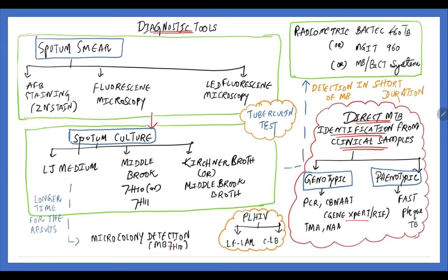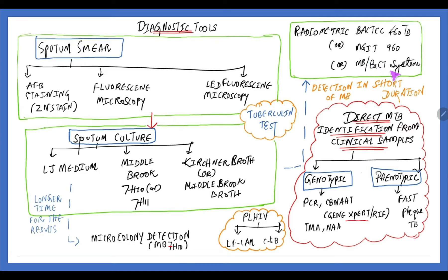Common diagnostic tools: first is smear, of which AFB smear is very common using Ziehl-Neelsen staining, fluorescent microscopy, and LED fluorescent microscopy. For sputum culture, LJ medium is the gold standard but has a longer incubation period. We can use other methods like microcholine detection by Middlebrook media, radiometric BACTEC, MGIT960, and MB-BACG system for faster detection.